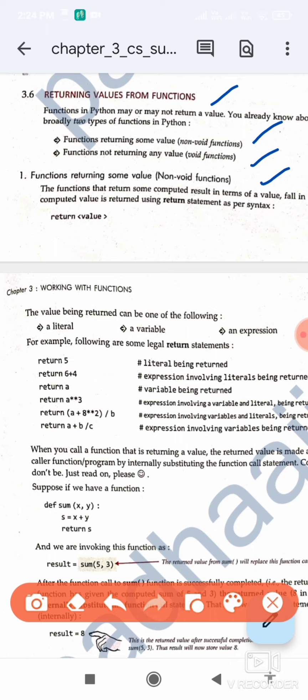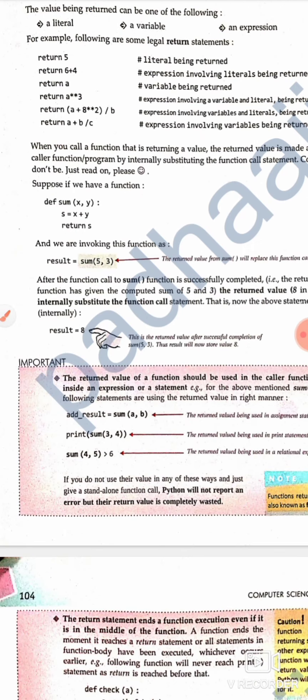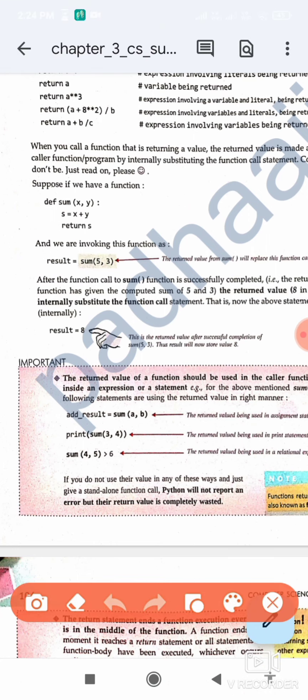Non-void functions have a return statement, as we've been seeing. I can say return x plus y, return 6 plus 4. The values being returned can be a literal, a variable, or an expression. For example, if I define sum(x, y) with return x plus y, when I call it I get the result as 8. I can write this return value into a variable.